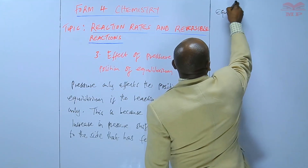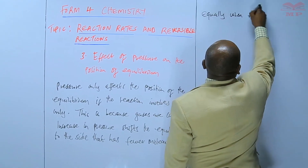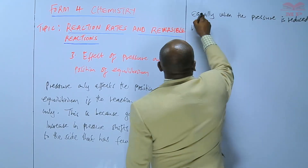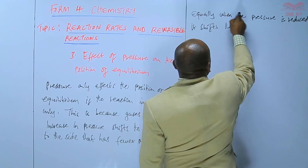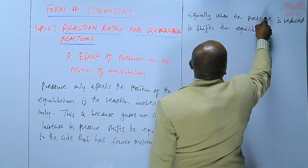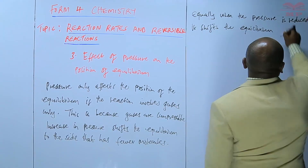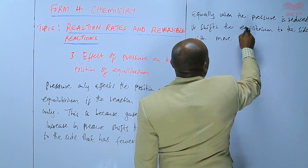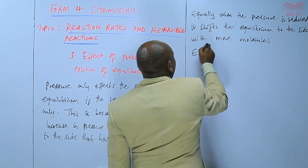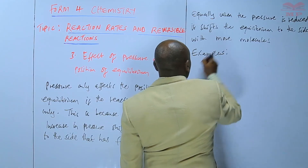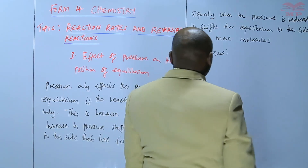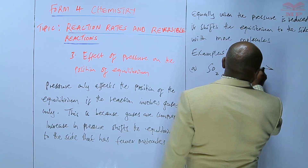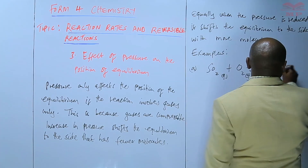So equally, when the pressure is reduced, it shifts the equilibrium to the side with more molecules. And you will see an example. In the contact process, sulfur dioxide (SO₂) combines with oxygen (O₂) to form sulfur trioxide (SO₃).